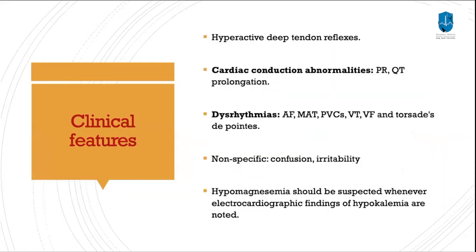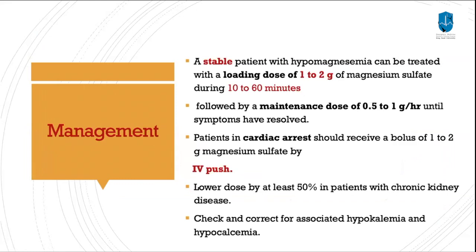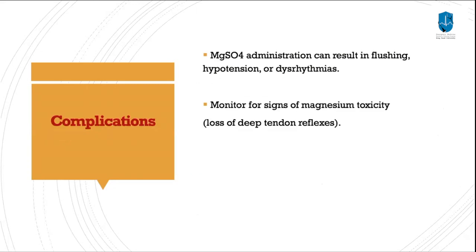For management of hypomagnesemia: if the patient is stable, treat with a loading dose of 1 to 2 grams of magnesium sulfate over 10 to 60 minutes, followed by a maintenance dose of 0.5 to 1 gram per hour until symptoms resolve. Patients in cardiac arrest should receive 1 to 2 grams of magnesium sulfate by IV push. Lower the dose by at least 50% in patients with chronic kidney disease. Check and correct for associated hypokalemia and hypocalcemia. Complications of magnesium sulfate administration include flushing, hypotension, or dysarrhythmia. Monitor for signs of magnesium toxicity, which is loss of deep tendon reflexes.